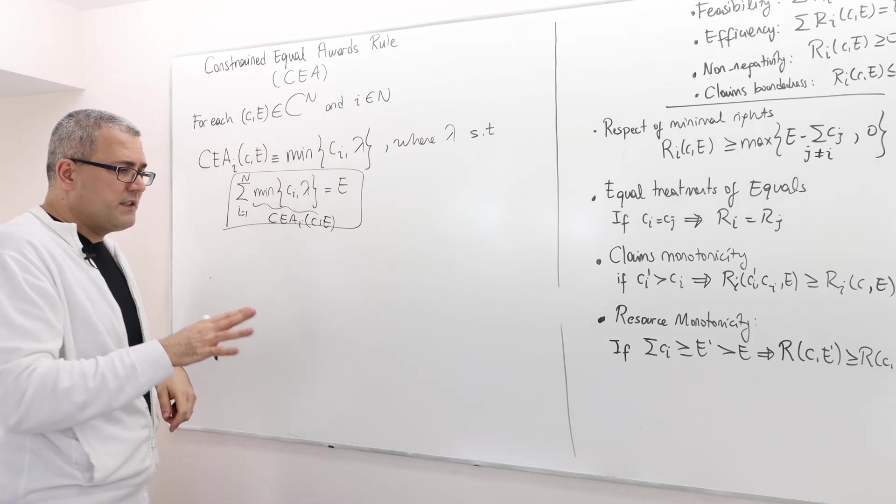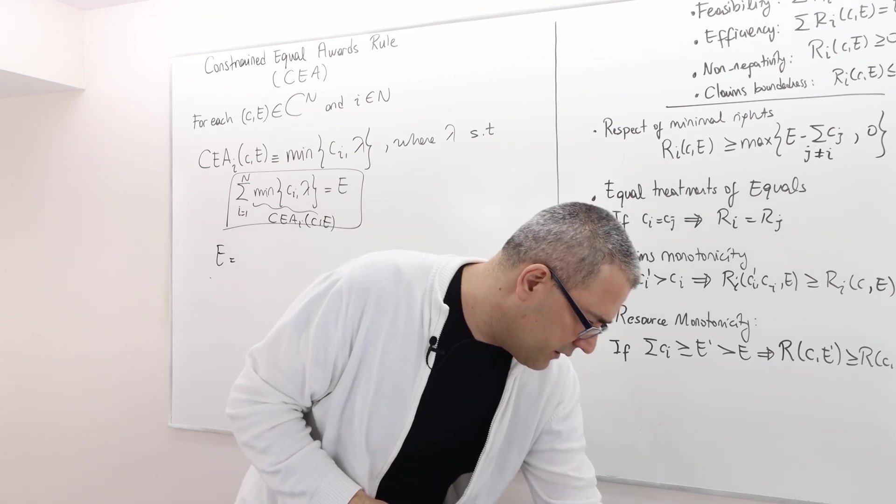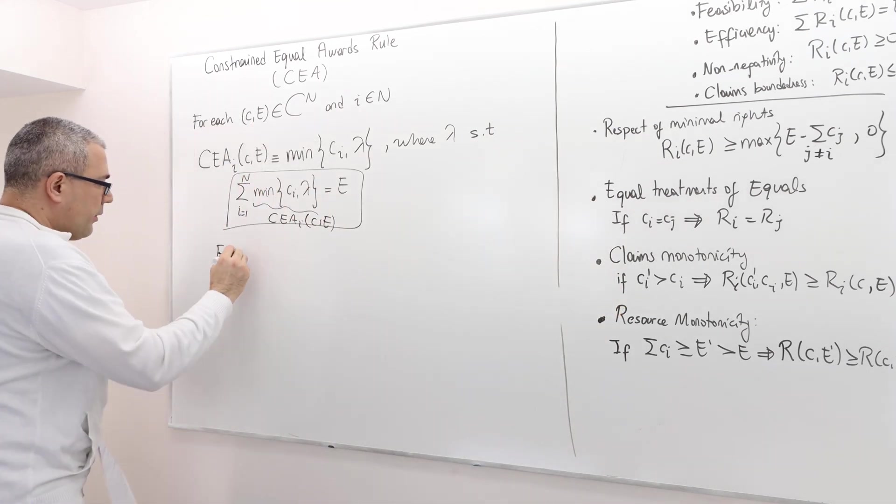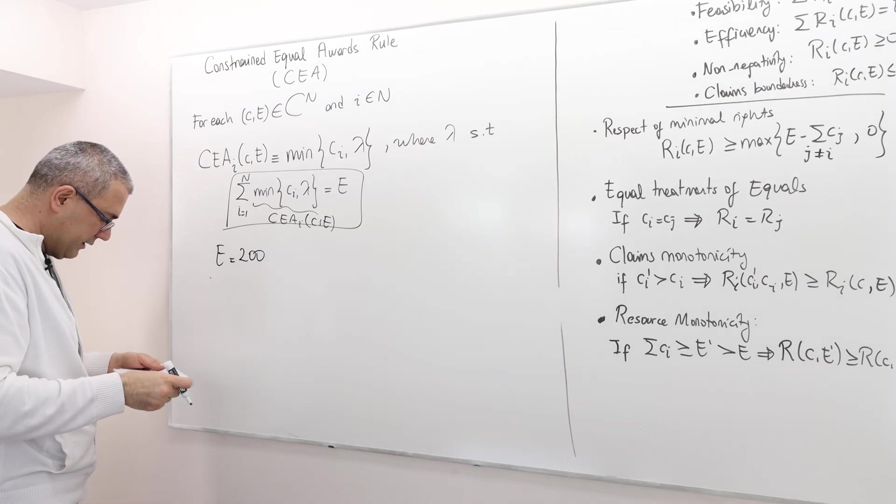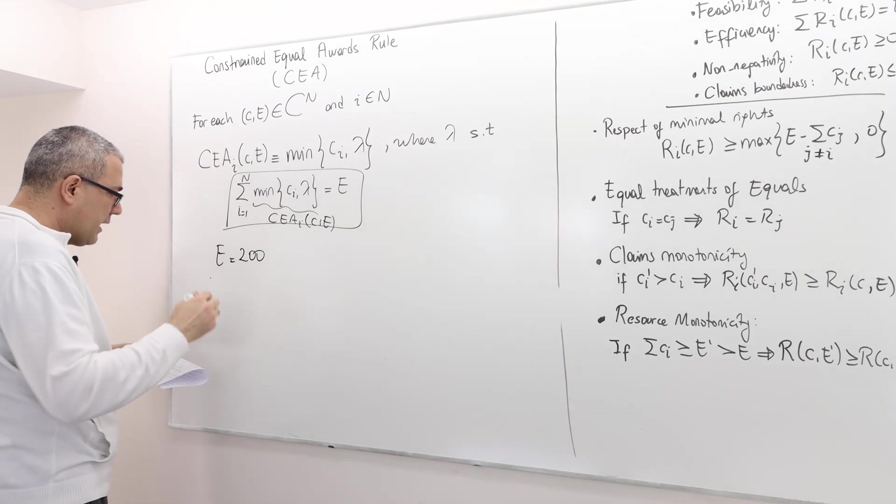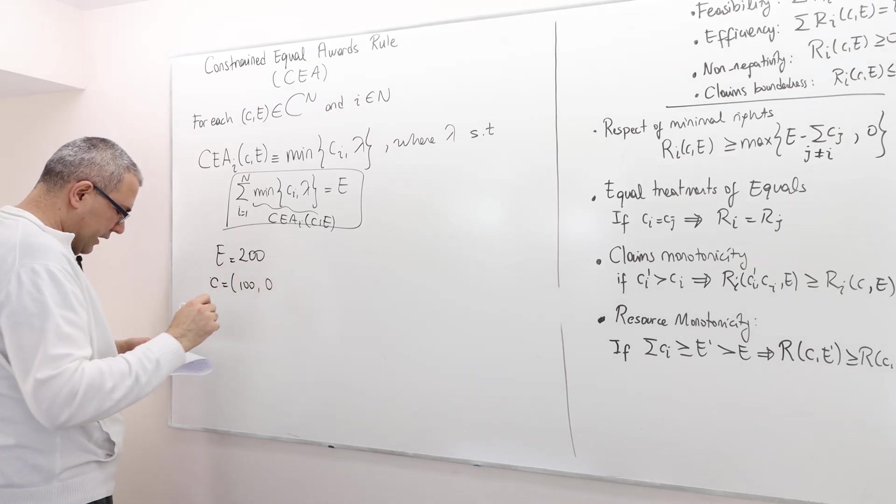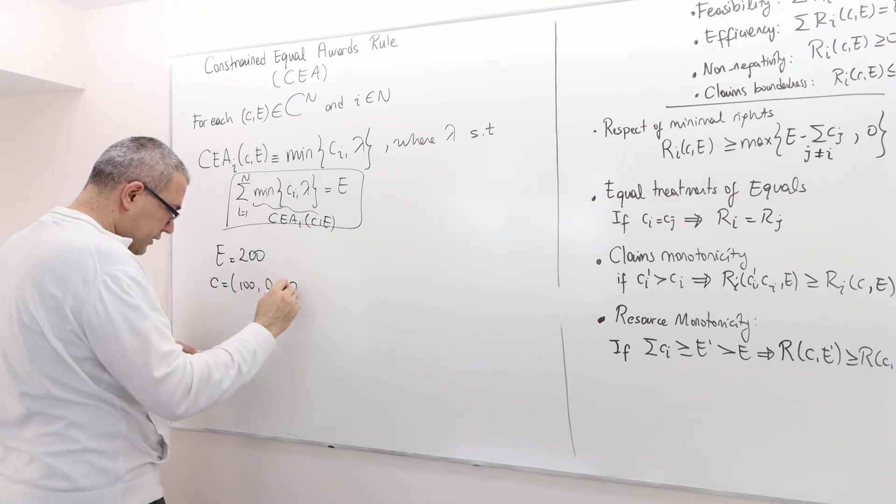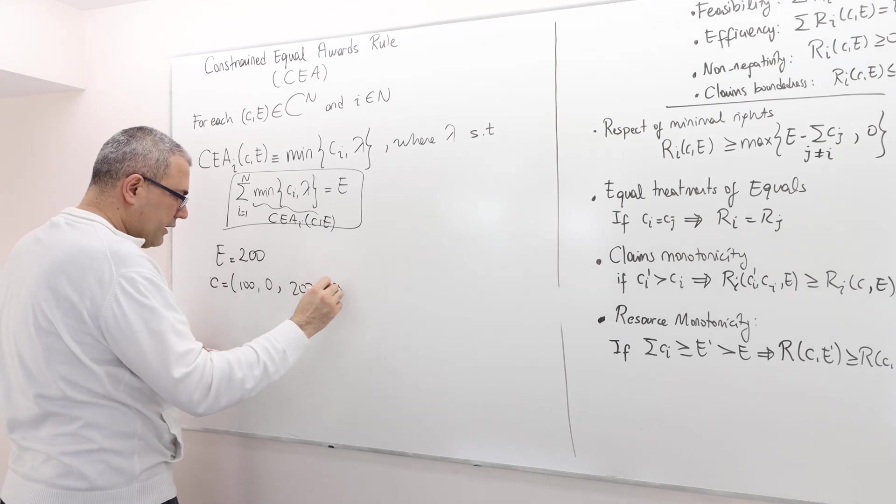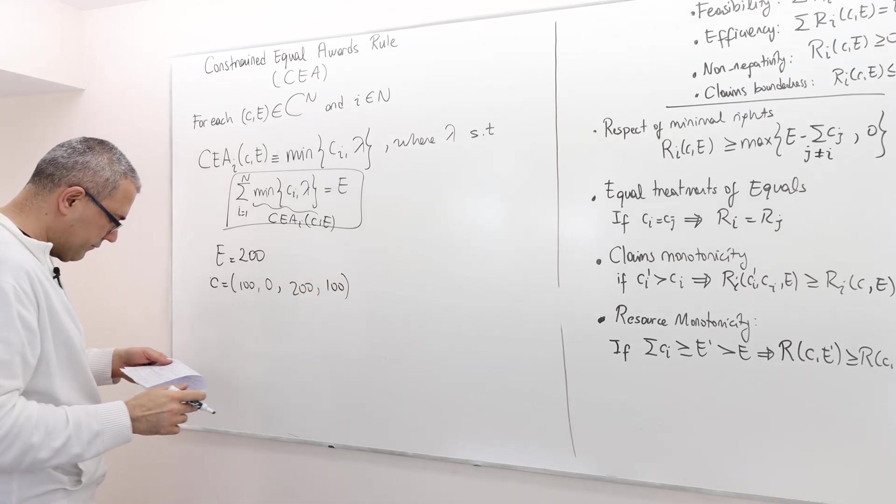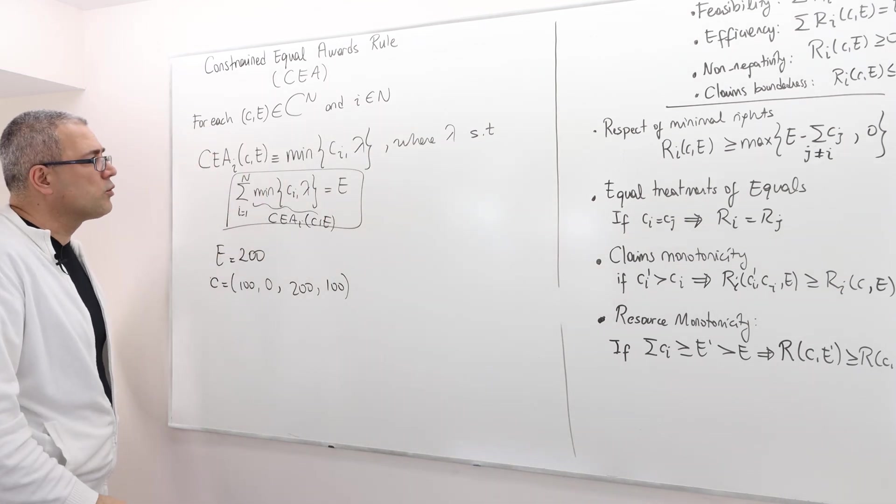Let's give an example. Suppose the surplus we would like to distribute among four players is 200 units and the claim vector is: the first agent claims 100, the second agent claims nothing (zero), the third agent claims 200, and the fourth agent claims another 100.